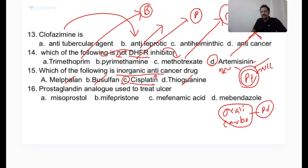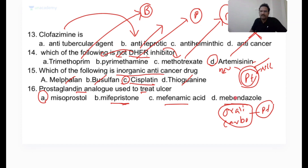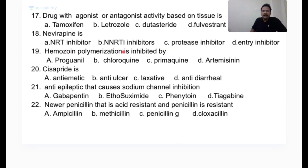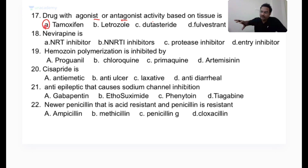Prostaglandin analog used to treat ulcer is misoprostol. Mefenamic acid is an NSAID; mebendazole is an antihelminthic drug. Drug with agonist or antagonist activity based on tissue type — this describes selective estrogen receptor modifiers (SERMs). Tamoxifen, toremifene, and clomiphene are SERMs — they act as estrogen agonists in some tissues (bone, endometrium) and antagonists in others (breast tissue).